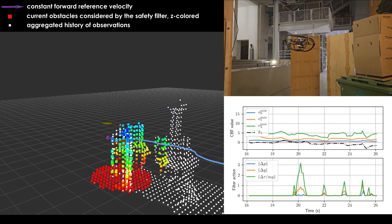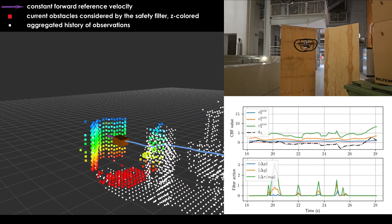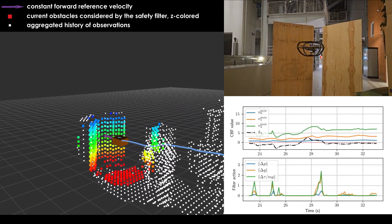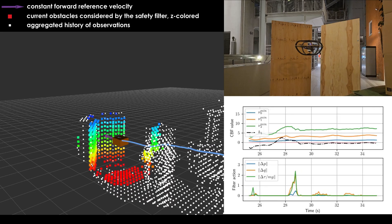The resulting safe control law avoids obstacles, deflecting the quadrotor horizontally and vertically to satisfy the constraints in the safety filter. Finally, the safety filter brings the quadrotor to a full stop in front of a wall.